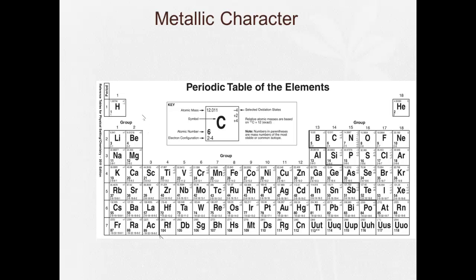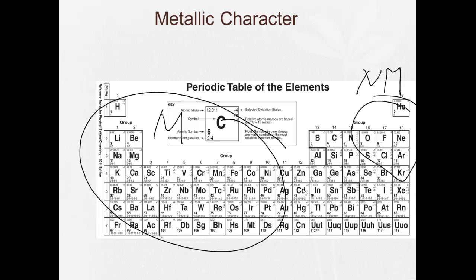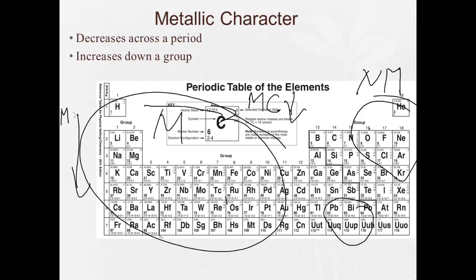Finally, metallic character. Since metals are on the left, here's our metals on the left, here's our non-metals on the right, so as we go from left to right, metallic character is going to decrease. As you go down a group, if we look here, non-metals on top, metals under the stairs, so as we go down a group metallic character increases.